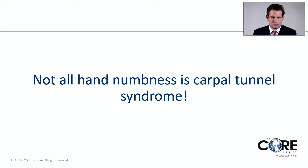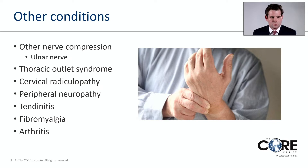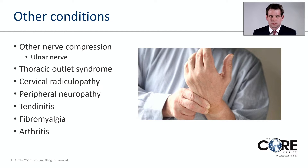It's important to remember that not all hand numbness is caused by carpal tunnel syndrome — there are other conditions that can cause similar symptoms. These include other peripheral nerve compression, such as compression of the ulnar nerve at the elbow or cubital tunnel syndrome, thoracic outlet syndrome (a pinched nerve between the neck and the arm), cervical radiculopathy (a pinched nerve in the neck causing neck pain and shooting electrical pains down the arm), peripheral neuropathy, tendinitis, fibromyalgia, and arthritis.